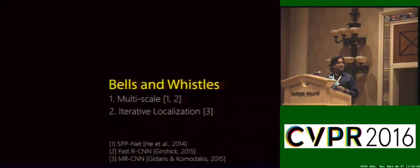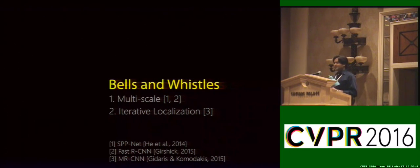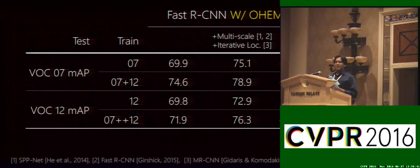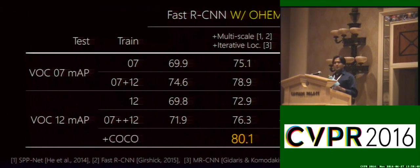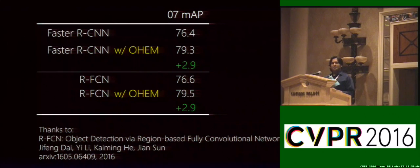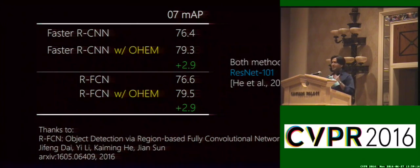Finally, we want to show that our approach is orthogonal to other recent advances in object detection, such as multi-scale training and testing from SPP-Net and iterative localization from multi-region CNNs. After these additions, we get a further boost of 4 to 5 points consistently. When we add even more data from MS COCO, we improve to 80.1 mean average precision, currently the highest number on the leaderboard amongst methods using the VGG16 network. The community has already started using this approach — Dai and colleagues used our method to train Faster RCNN and region FCN and consistently got a 3-point boost, using the ResNet network architecture.